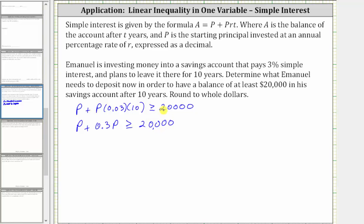Combining like terms on the left, P plus 0.3P, or 1P plus 0.3P is equal to 1.3P, which is greater than or equal to 20,000.